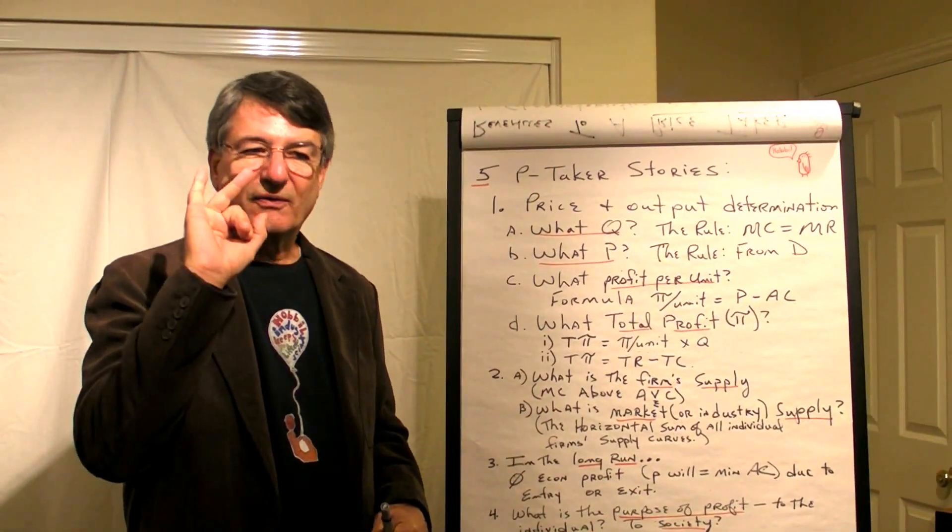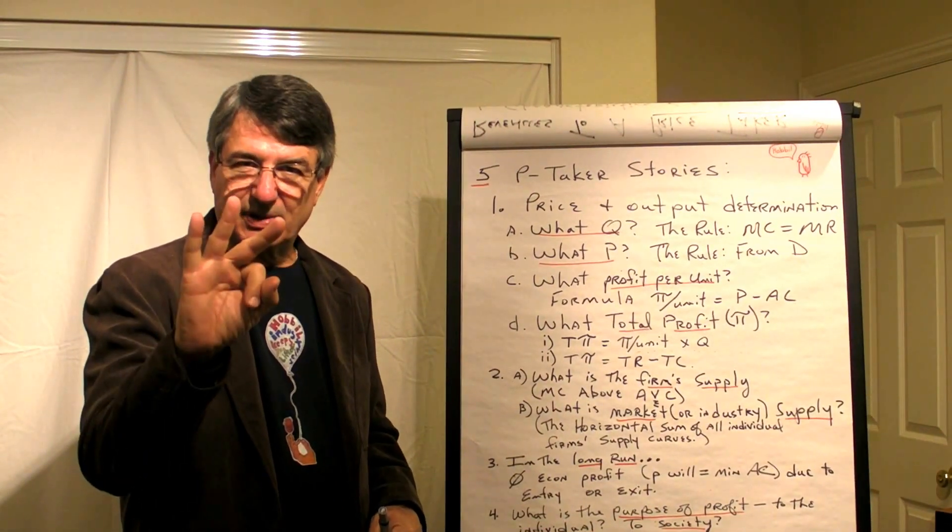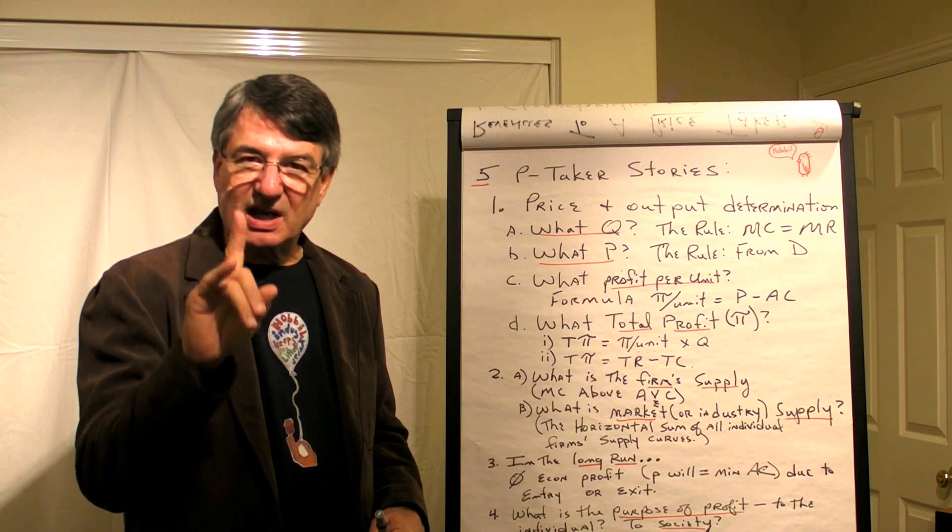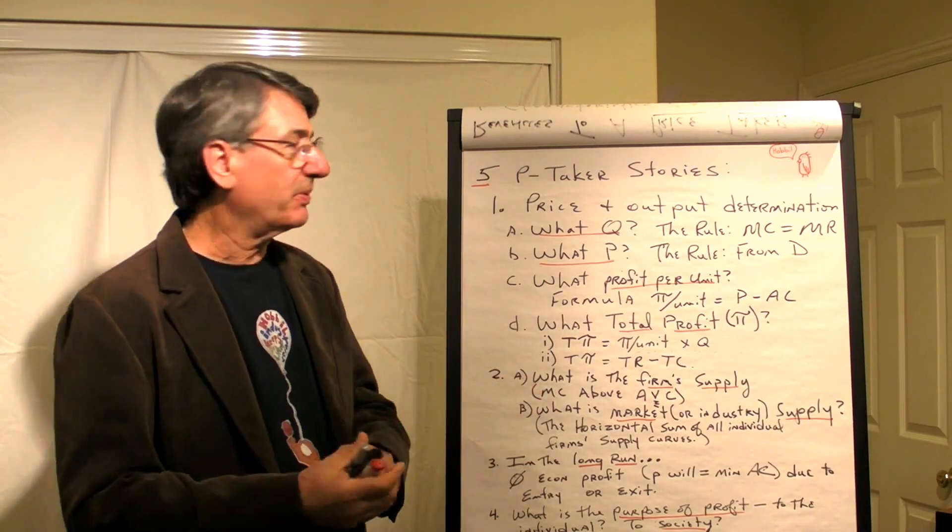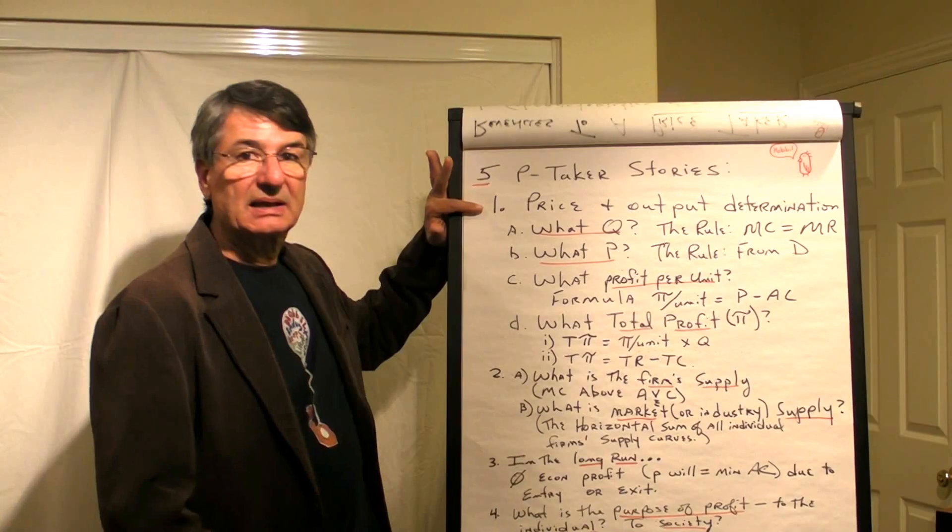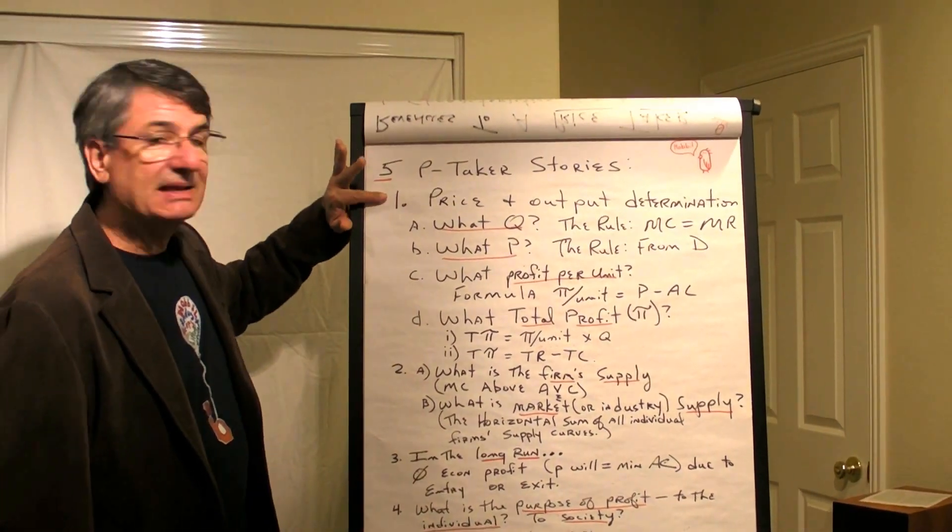So the first of our market types is pure competition: many small sellers, free entry and exit, homogeneous product. When we talk about how firms in pure competition interact, how they behave, I tell five stories.